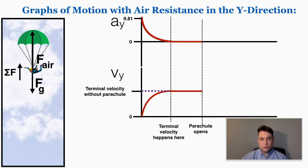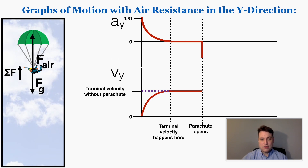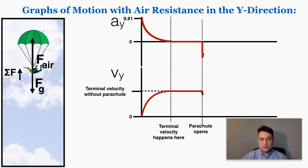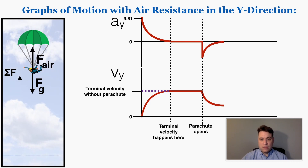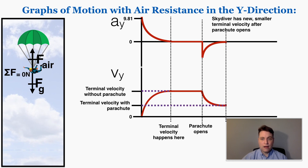Suddenly the net force is pointing up, which means the acceleration is also pointing up, and since up is negative on the graph, the acceleration suddenly jumps to being very negative. The velocity is still positive but the acceleration is negative, so the acceleration rapidly takes away from the velocity. As velocity gets smaller, the force of air resistance gets smaller until it balances out with gravity again. By that time, velocity has gotten significantly smaller, so the person is now at a new, much smaller terminal velocity with their parachute, which they maintain until they hit the ground.